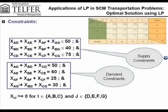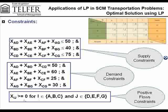Same thing for F and G — the inflows into F and G have to be equal to 25 and 30 respectively. The last set of constraints are your non-negativity constraints, so all of your flows are positive: X_IJ is greater than or equal to 0, where I is either A, B, or C, and J is either D, E, F, or G.